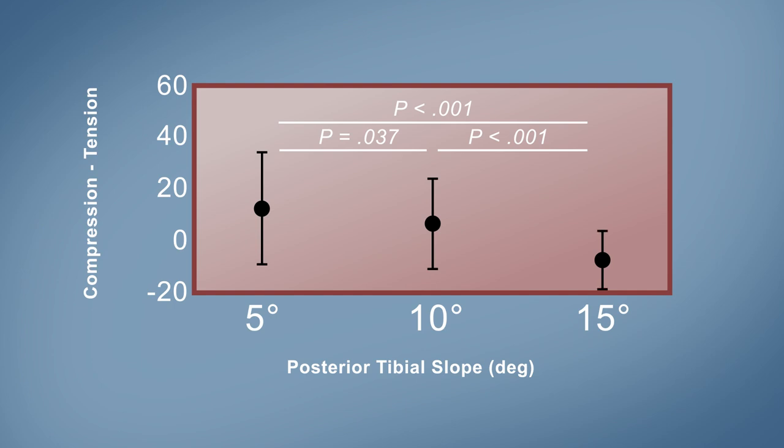The team discovered that the tension on the PMMR decreased as the posterior tibial slope increased from 5 degrees to 10 degrees, but increased at 15 degrees of posterior tibial slope.